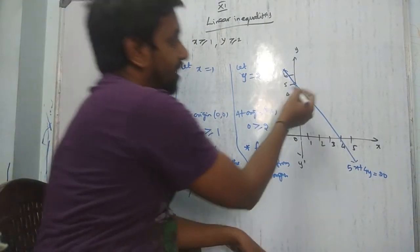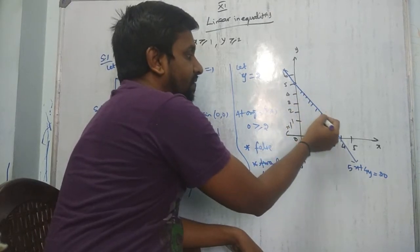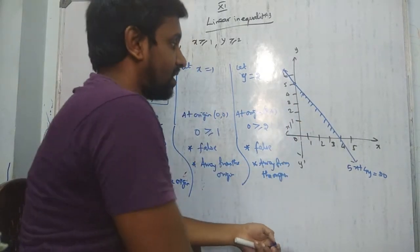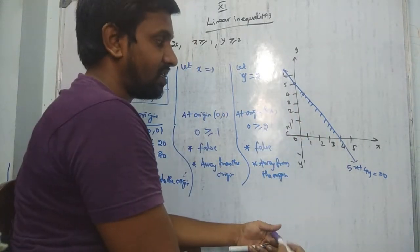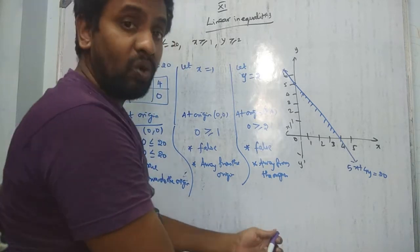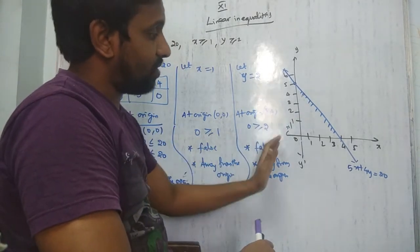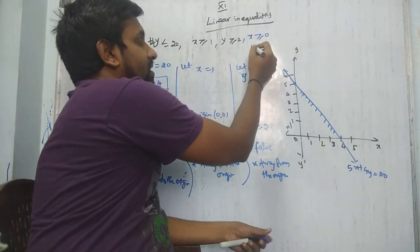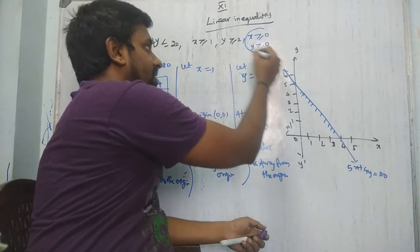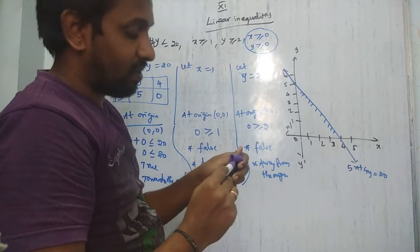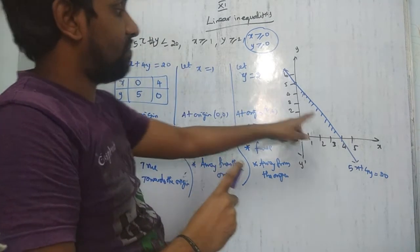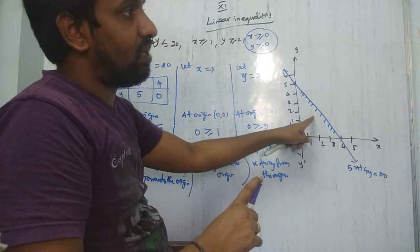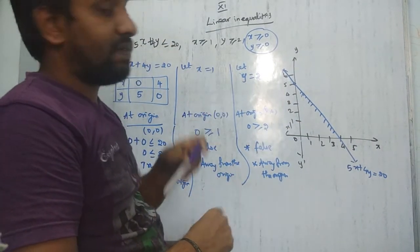For shading: since the origin check was true, shade towards the origin. You may wonder why we don't shade the second, third, or fourth quadrant — because for all inequality problems they will give x ≥ 0 and y ≥ 0, meaning we work only in the first quadrant. If there is only one equation, that shaded region is the feasible, closed, or bounded region.